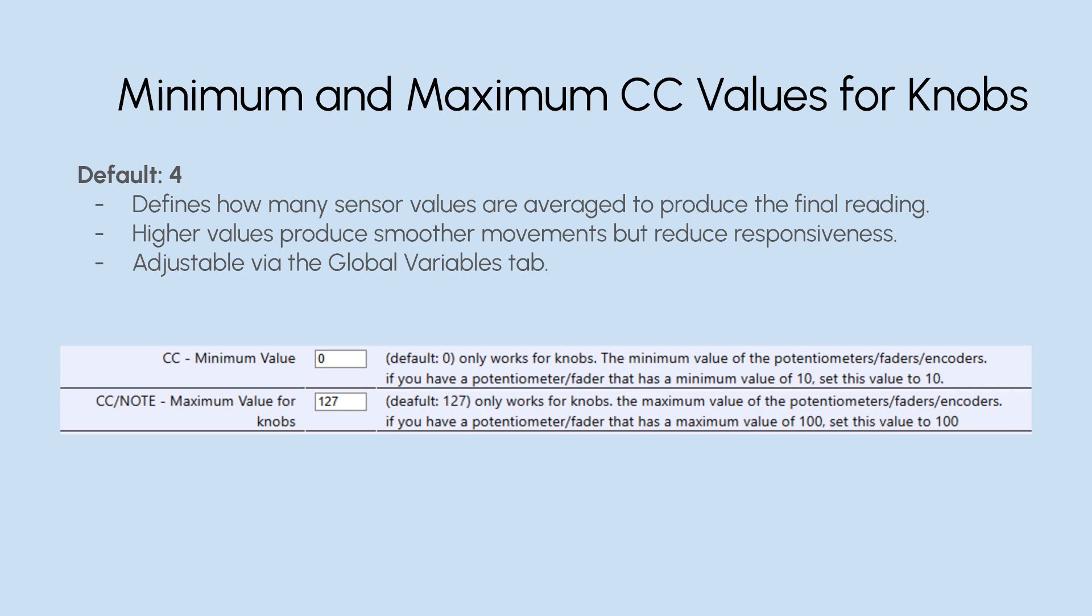Minimum and maximum CC values for knobs. This setting applies to potentiometers, faders, and encoders in the normal MIDI mode. You can define minimum and maximum values to limit the range of MIDI messages sent by these controls. This is useful when you want to prevent values from going too low or too high. For example, if you want your potentiometer to only send values between 10 and 100, you can set the minimum to 10 and the maximum to 100. This ensures that the control stays within the desired range. You can adjust these values in the global variables tab to customize the behavior of your device.